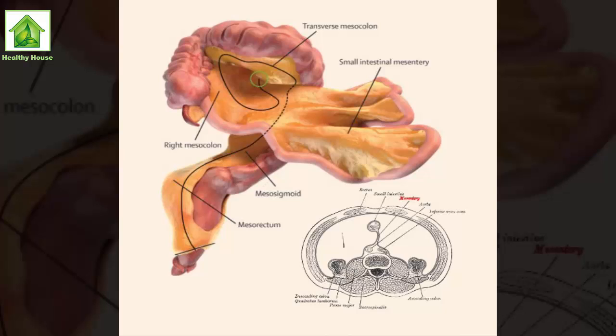Known as the mesentery, the new organ is found in our digestive systems and was long thought to be made up of fragmented separate structures. But recent research has shown that it's actually one continuous organ. The evidence for the organ's reclassification is now published in The Lancet Gastroenterology. In the paper, which has been peer-reviewed and assessed...